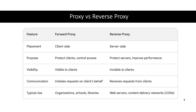Now since we know proxy and reverse proxy, let us summarize the differences between them. Forward proxy is on the client side; reverse proxy is on the server side. The purpose of forward proxy is to protect the client and control what websites they can access. Reverse proxy is used to protect the servers serving content to users and also helps improve performance. Forward proxies are visible to clients and reverse proxies are invisible to clients. Forward proxies make requests to web servers on behalf of the client, while reverse proxies receive requests from clients and forward them to internal web servers. Forward proxies are used by organizations, schools, and libraries, and reverse proxies are used by web servers and content delivery networks.